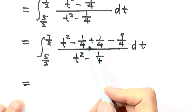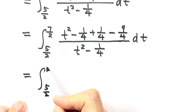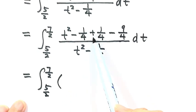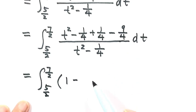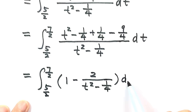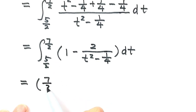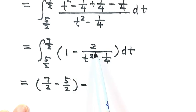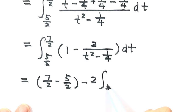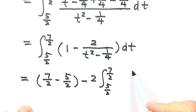We separate the integral into two parts. The first part integrates to just the upper bound minus the lower bound, which equals 1. The second part: we take the constant 2 outside, giving 2 times the integral from 5/2 to 7/2 of 1/(t² - 1/4) dt.